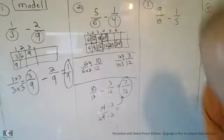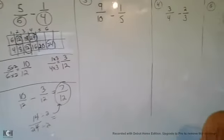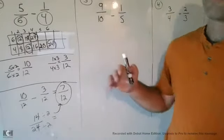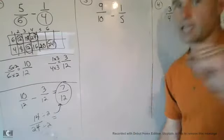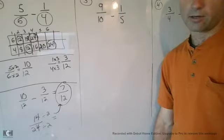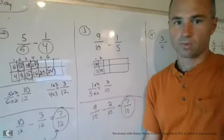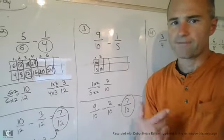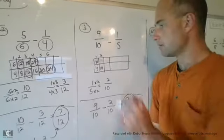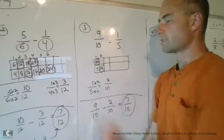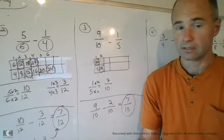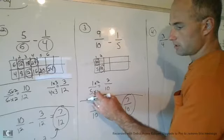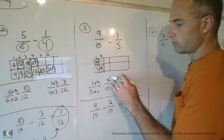Alright, number 3, here we go. 9/10 minus 1/5. Find the common denominator, find the equivalent fractions, and subtract. Go ahead and do that now, please. 9/10 minus 1/5. I found the common denominator to be 10. It's the smallest denominator I can find that's common. So I take 1/5 and I convert it into an equivalent fraction of 2/10.